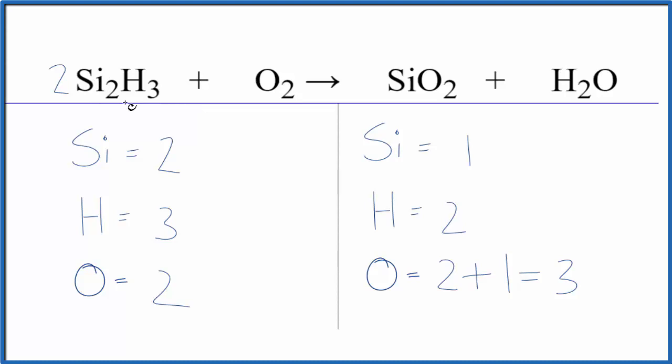We have the 2 silicon here, 2 times 2, that gives us 4, 2 times 3, that'll give us 6 hydrogen, we still have 2 oxygens. So I can work with that.